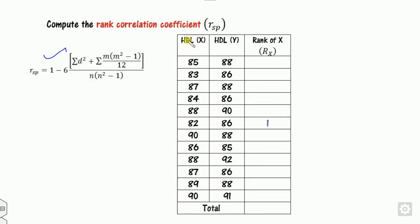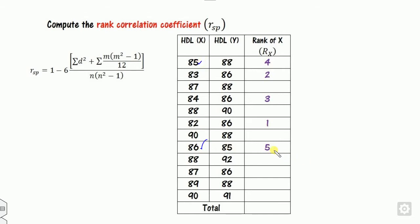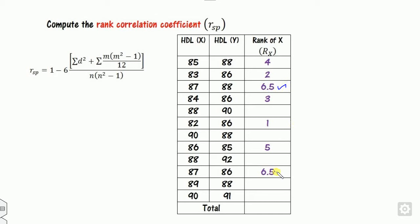Since there is repetition, use the tie correction formula. The smallest element in x is 82 — rank 1. Next is 83 — rank 2. Then 84 — rank 3. Then 85 — rank 4. Then 86 — rank 5. Now 87 appears two times, occupying positions 6 and 7, so take the average: (6+7)/2 = 6.5. Assign 6.5 to each occurrence of 87.